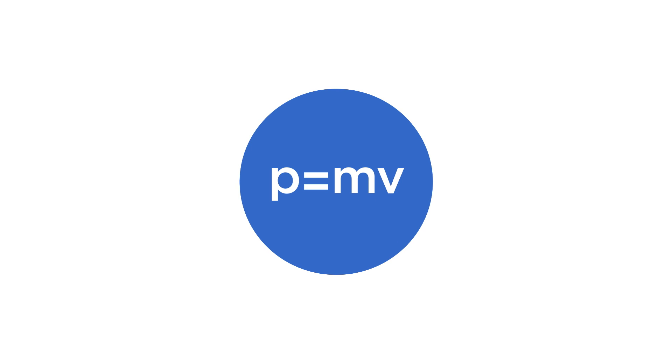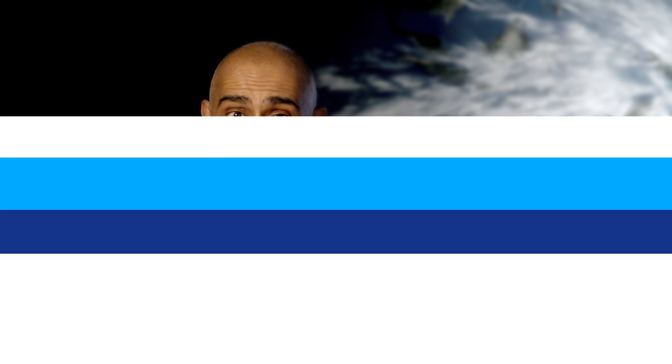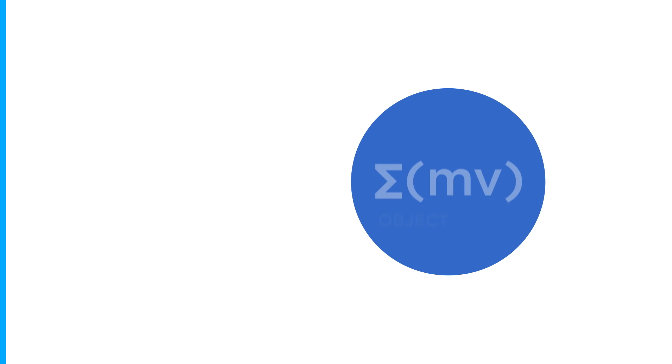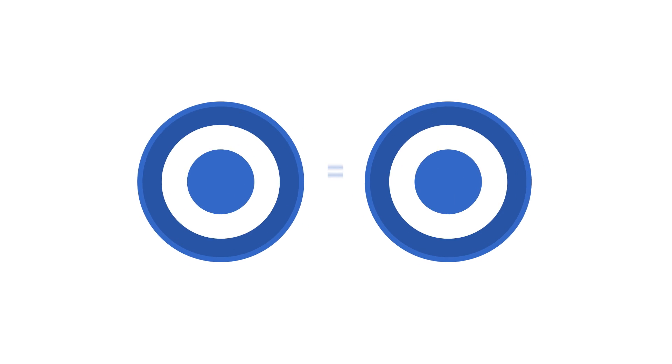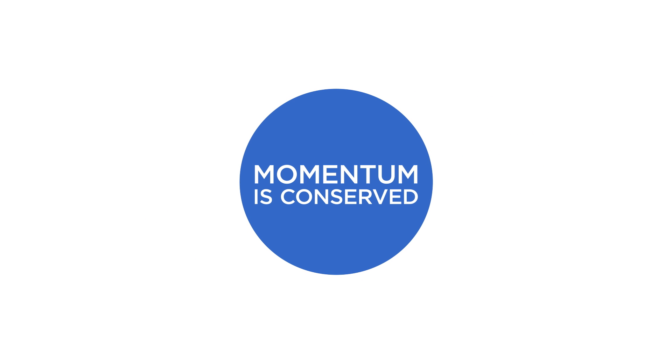Momentum is defined as being the product of an object's mass and its velocity. And Sir Isaac Newton showed that during any collision process between two isolated objects, the total momentum of this closed system after the collision is the same as the momentum before. Momentum is conserved.